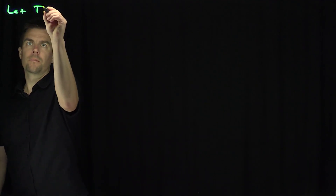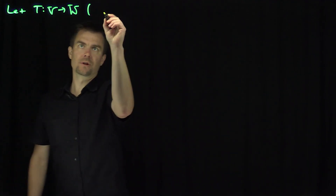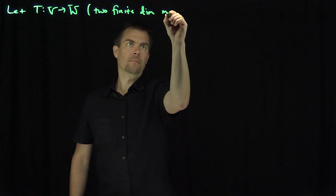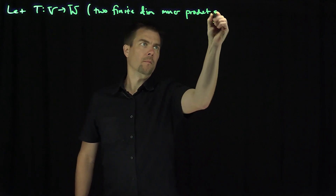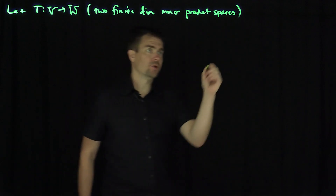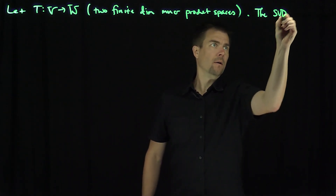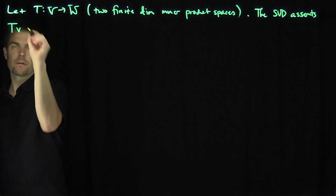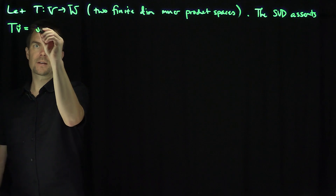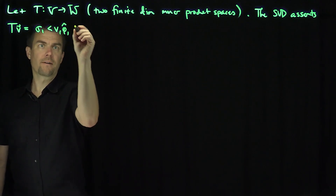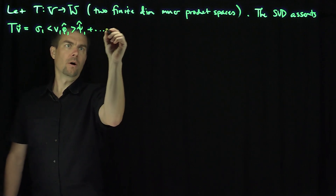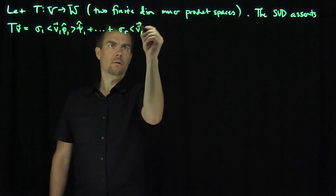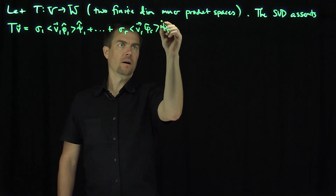Let T map V into W, two finite dimensional inner product spaces. The SVD asserts that if I plug in any vector V into T, I can express this as sigma_1 times the inner product of V with phi_1-hat, times psi_1-hat, all the way down to sigma_r times the inner product of V with phi_r-hat, times psi_r-hat.